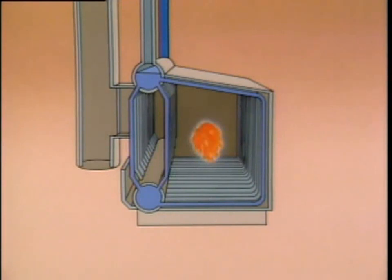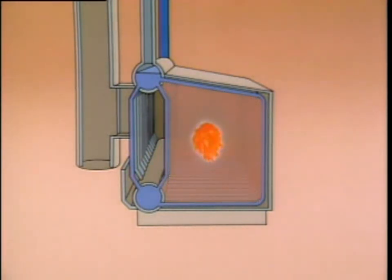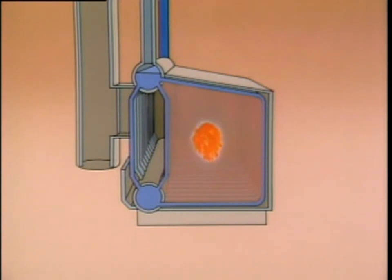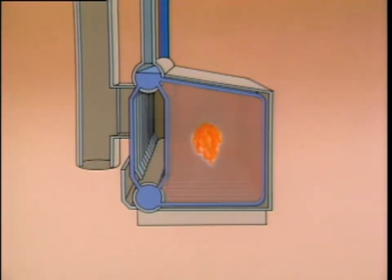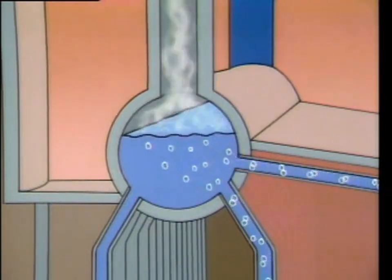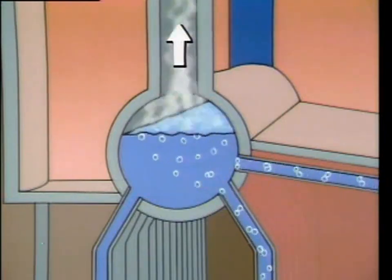As fuel is burned in the combustion area, heat is transferred to the adjacent water tubes. The combustion gases then flow out of the boiler. Water circulates from the upper drum through the water tubes and into the lower drum, which is often referred to as the mud drum. From the lower drum, the water is distributed to the water tubes surrounding the combustion area. As the water in the tubes is heated, a steam-water mixture is produced. The steam-water mixture enters the upper drum, where the steam is separated from the water and routed through the steam outlet and into the plant.